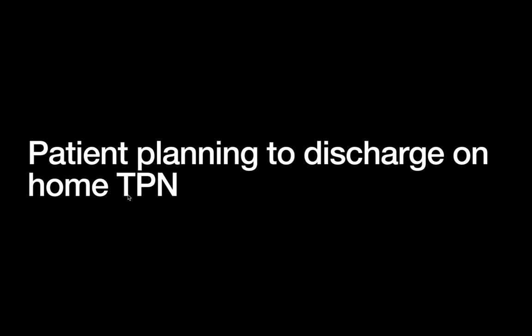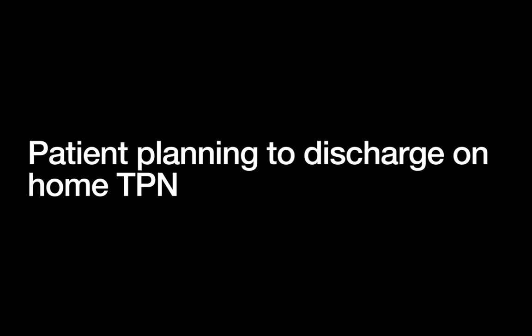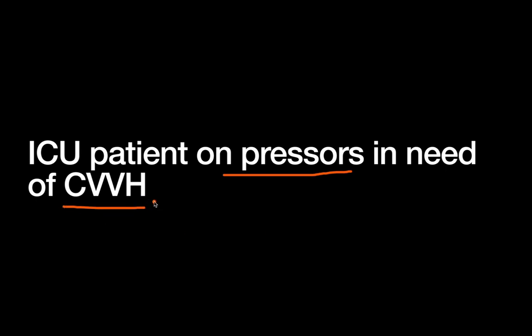Next scenario: a patient ready for discharge who can't eat and will go home on TPN, which requires central access. For outpatient therapy, you're typically thinking about PICC lines — peripherally inserted, lower infection risk, easier for patients to manage at home. Another option placed by interventional radiology would be a tunneled central line. Final scenario: an ICU patient on pressors who also needs CVVH or CVVHD — continuous dialysis — and you'd also like central medication access. This is a great example where a trialysis line is really useful — you can run dialysis through that line and also administer central medications.